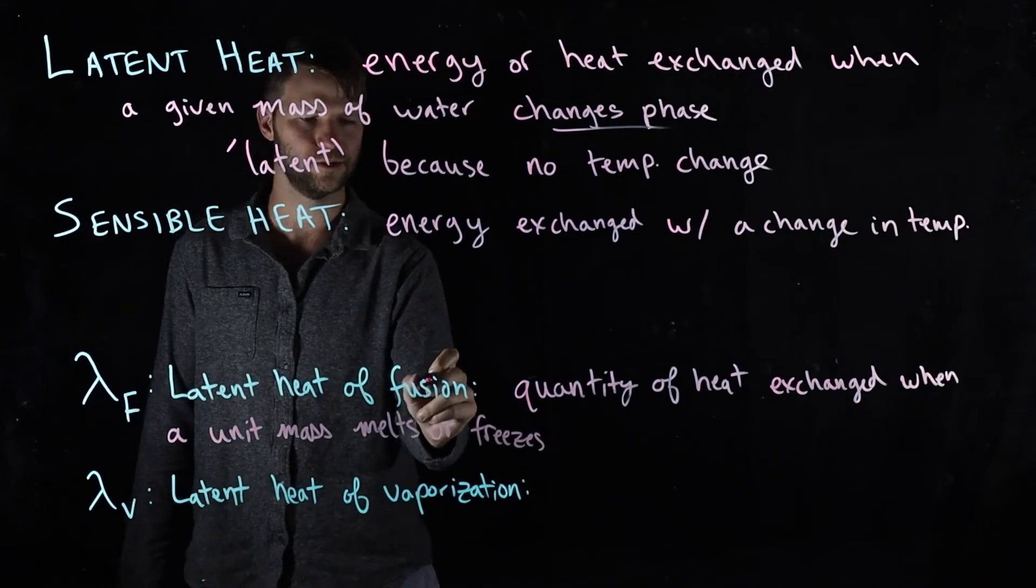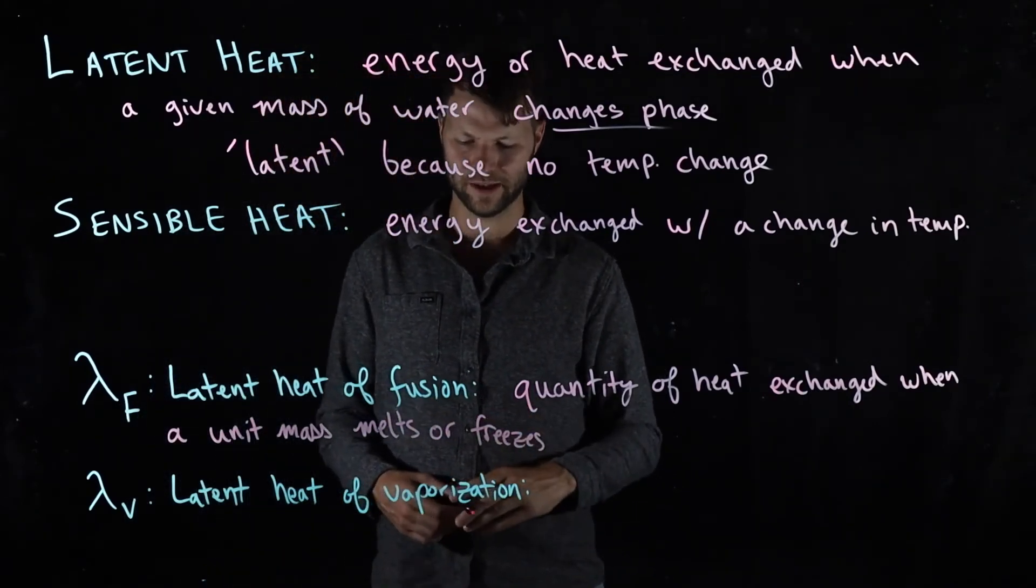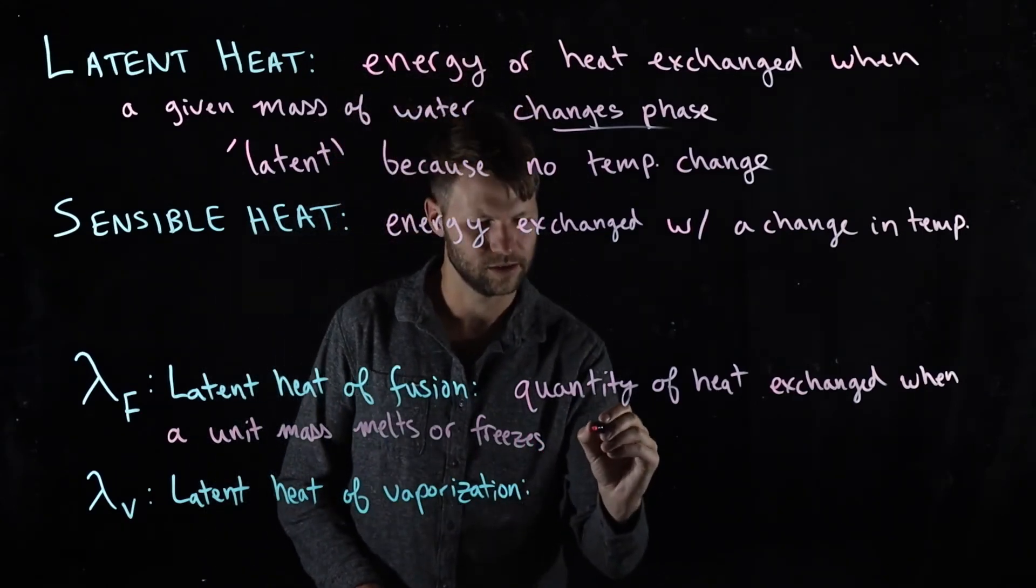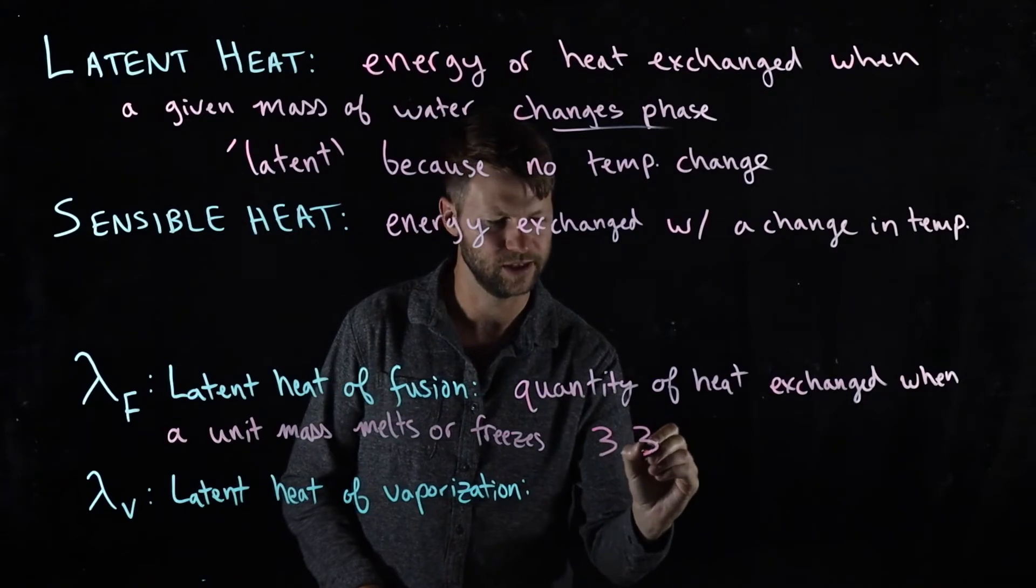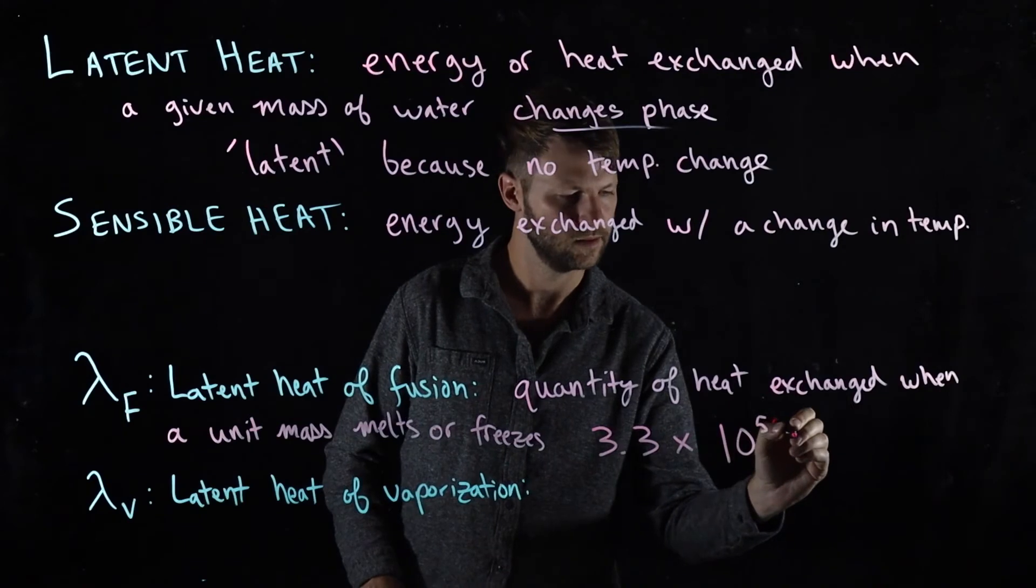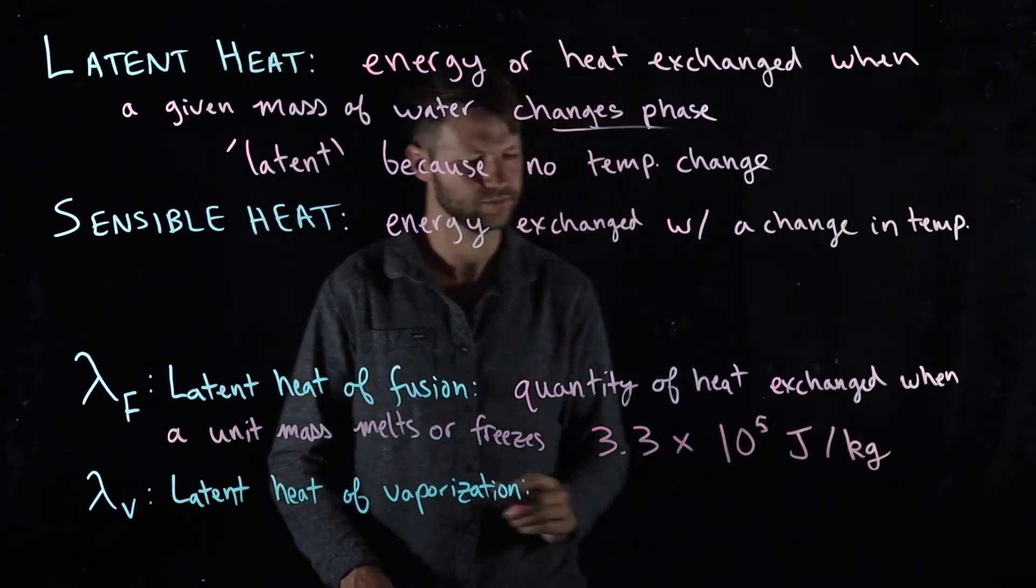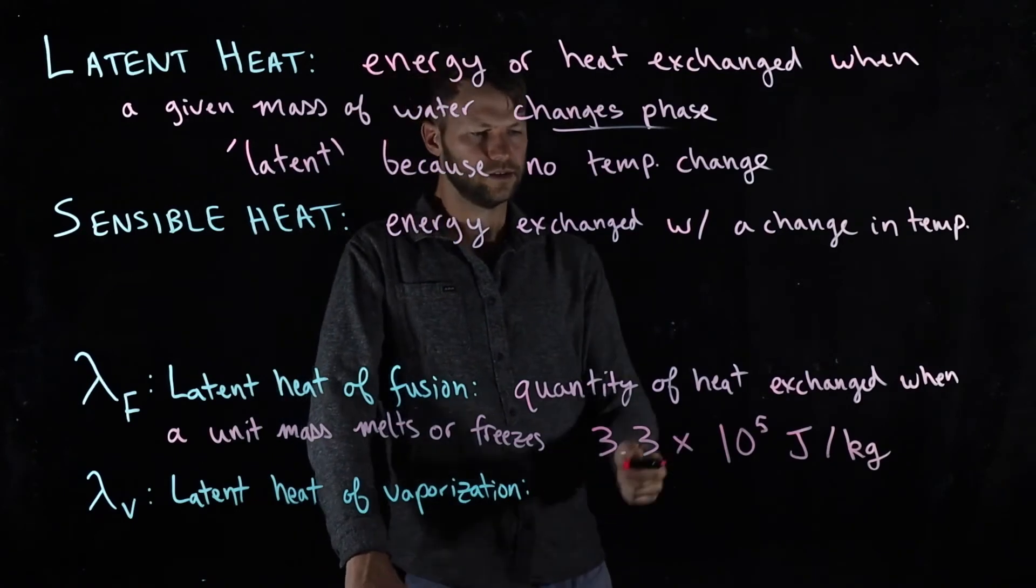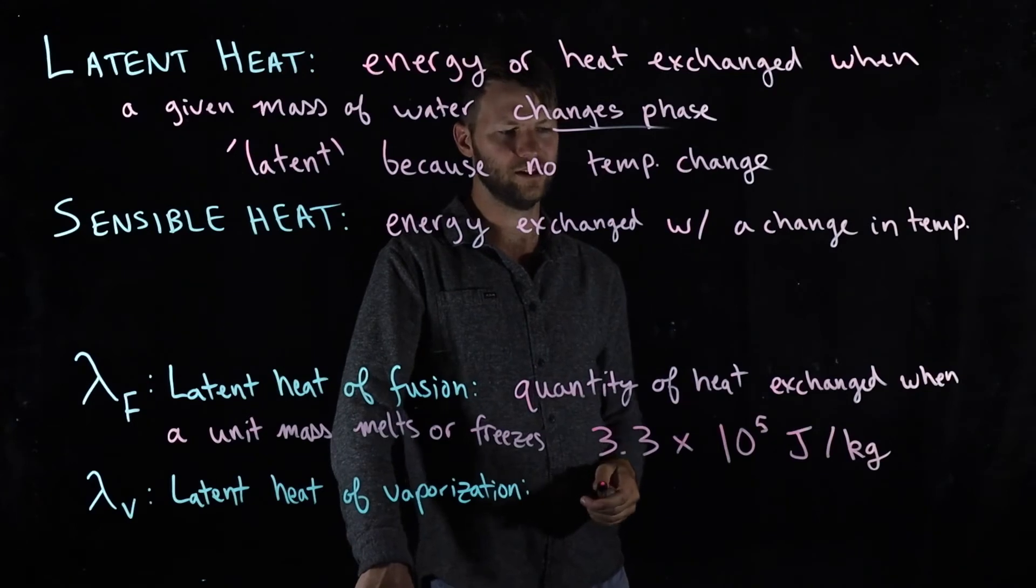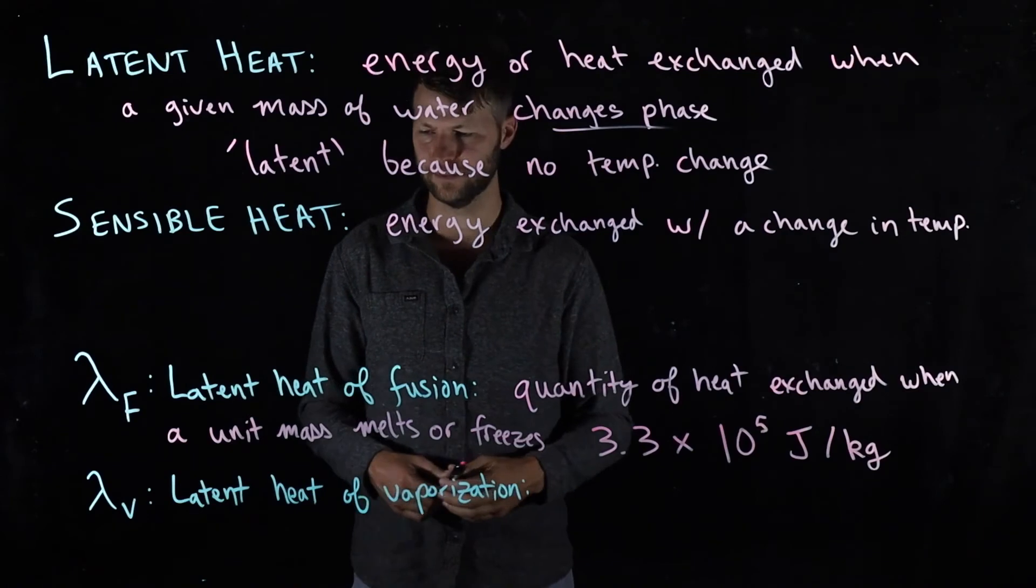This term fusion is referring to this process of melting or freezing, and we know that it's happening at zero degrees Celsius. This amount is 3.3 times 10 to the fifth joules per kilogram of water. So more than 300,000 joules are required to melt a block of ice, for example.